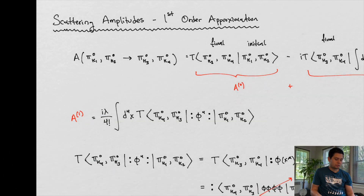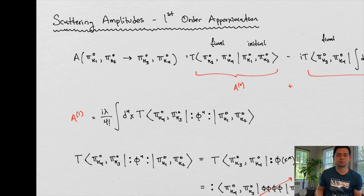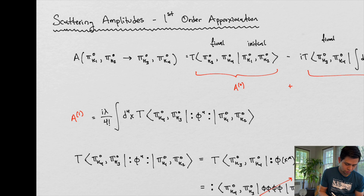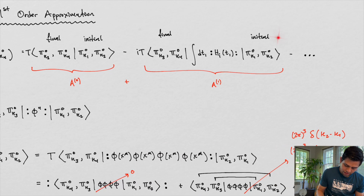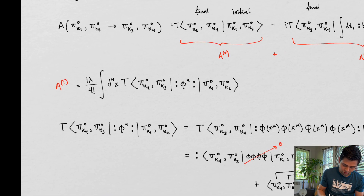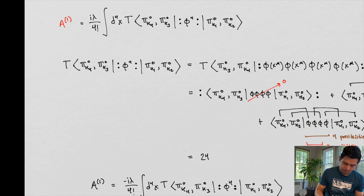Make sure to hit that like and subscribe button. We're talking about scattering amplitudes and we're on the first-order approximation now. Last time we talked about the zeroth-order approximation, in which we considered just calculating that term. Now we want to calculate the first-order term, so we're going to consider just that term.